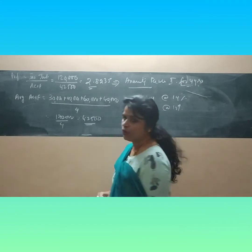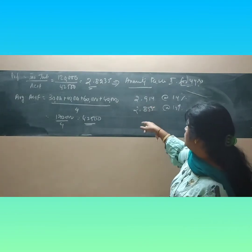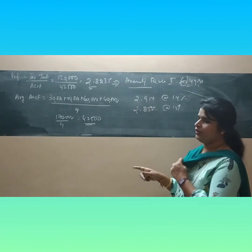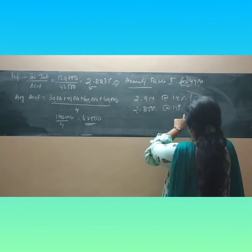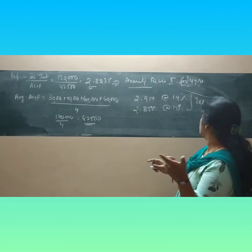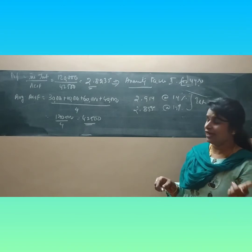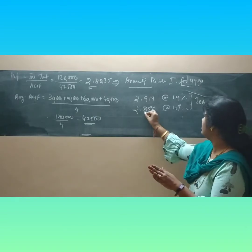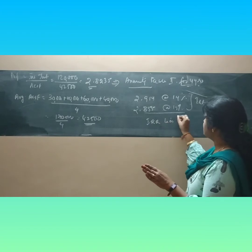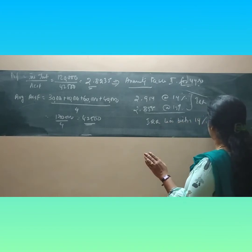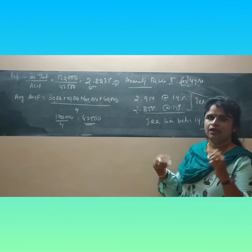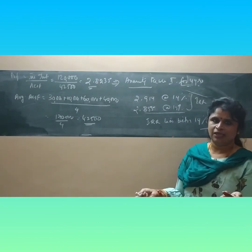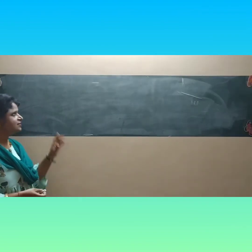At 15%, the annuity table gives a value of 2.855. Our computed factor of 2.8235 lies between these two values, so we can say the IRR lies between 14% and 15%. But you can't stop there — you have to be accurate and interpolate using the trial and error procedure.